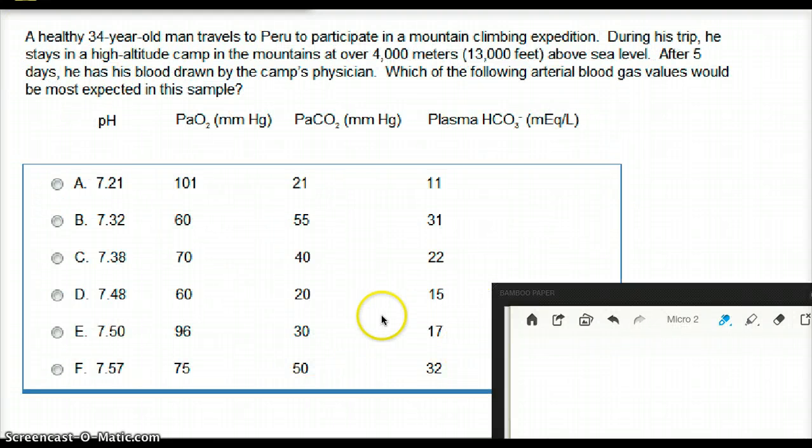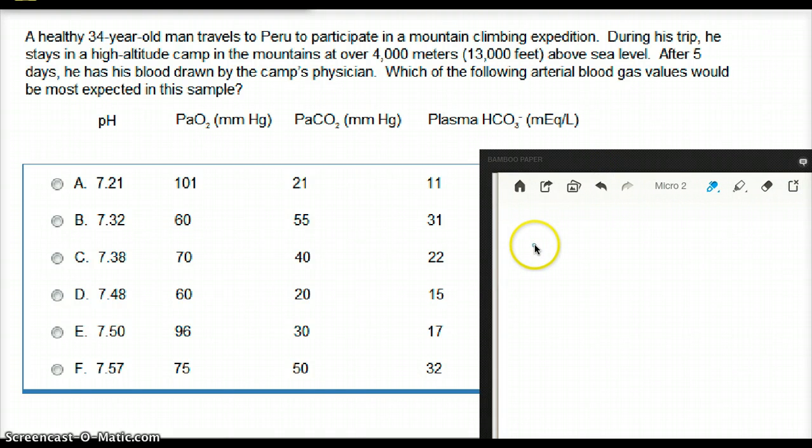So, how are we going to think about this question? This patient is in a mountain climbing expedition, and he has been there for 5 days. And what happens in a mountain situation? A patient tends to hyperventilate a little bit, because they're trying to get more oxygen. So, what can you say about the level of oxygen? The oxygen is going to be low at high altitude, and the carbon dioxide is going to be low also, because the patient is slightly hyperventilating. And so, what's going to happen to the pH value? The pH value is going to be high.